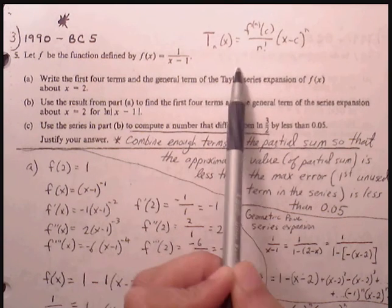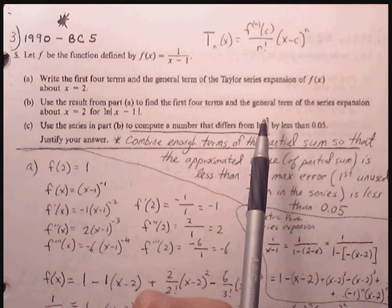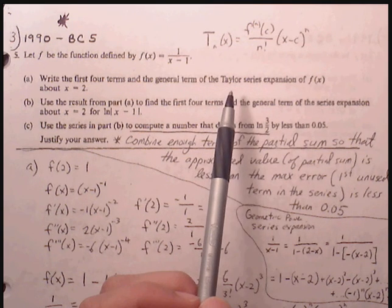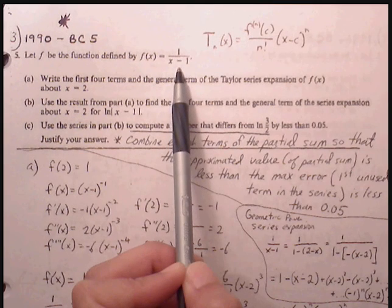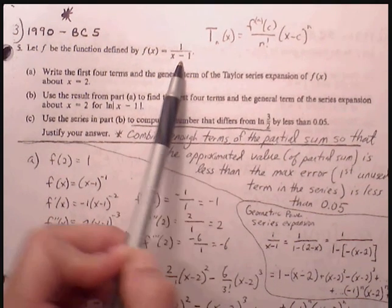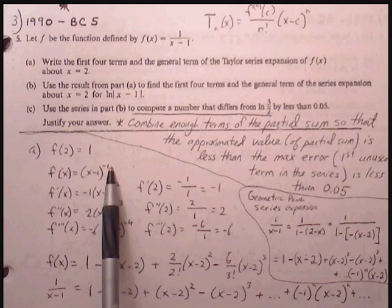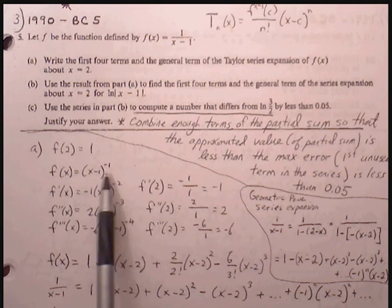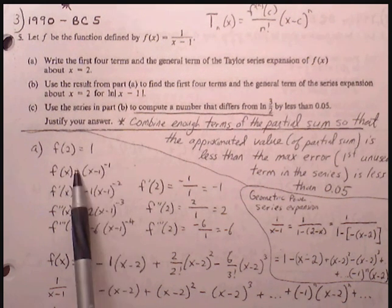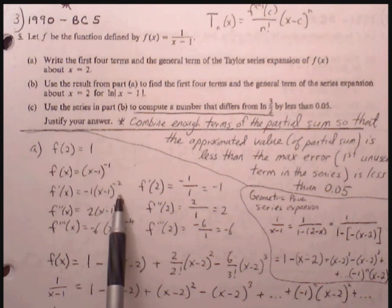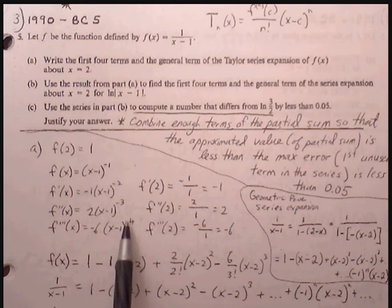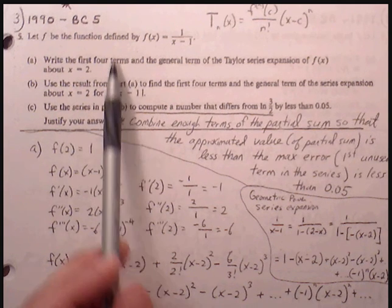We can build the first four terms using our Taylor rule. The first thing we can do is rewrite the function in a form that will allow us to easily find the derivatives. We can represent 1/(x-1) as (x-1) to the negative 1. Then we use the chain rule to get each of the derivatives. First derivative: negative 1 times (x-1) to the negative 2. Second derivative: bring down the negative 2, subtract 1 from the exponent; third derivative: bring down negative 3, subtract 1 from the exponent. Then we evaluate each derivative at x = 2.